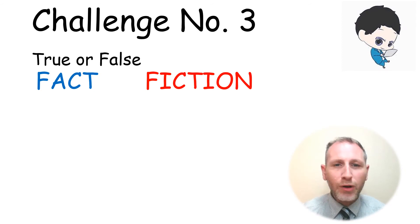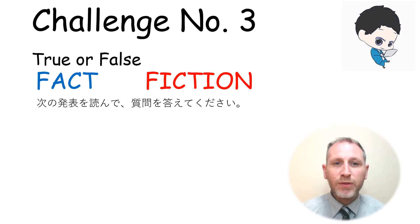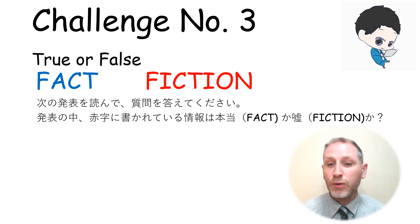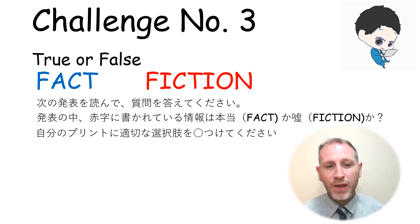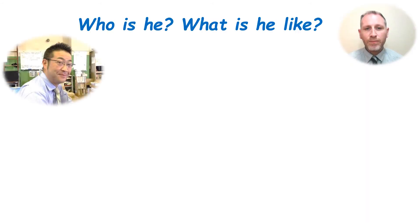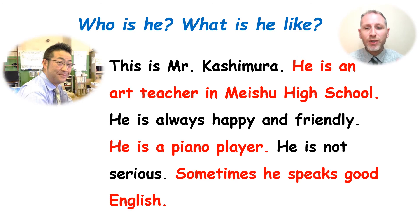Challenge number three is all about true or false — 'Honto ka uso ka,' or fact or fiction. The information has been written for you. Are they true or false? First: 'This is Mr. Kashimura. He is an art teacher in Meishu High School. He is always happy and friendly. He is a piano player. He is not serious. Sometimes he speaks good English.' Now — true or false? Good luck.